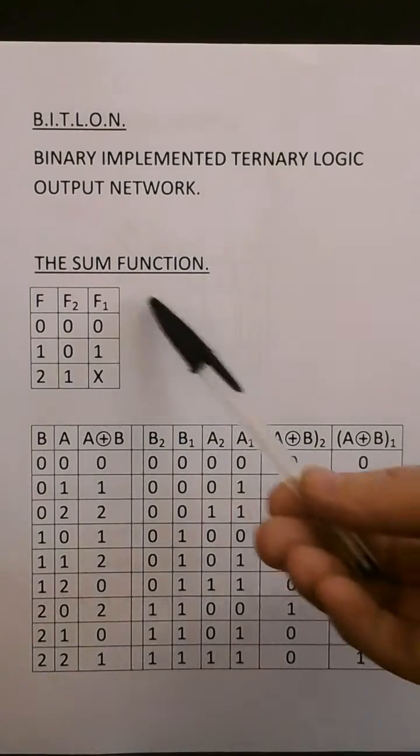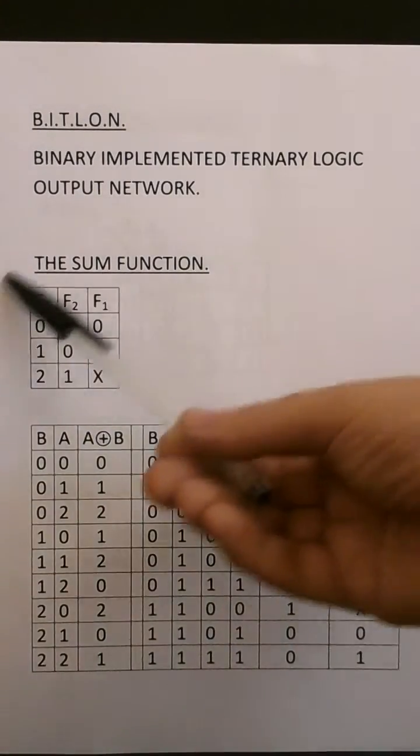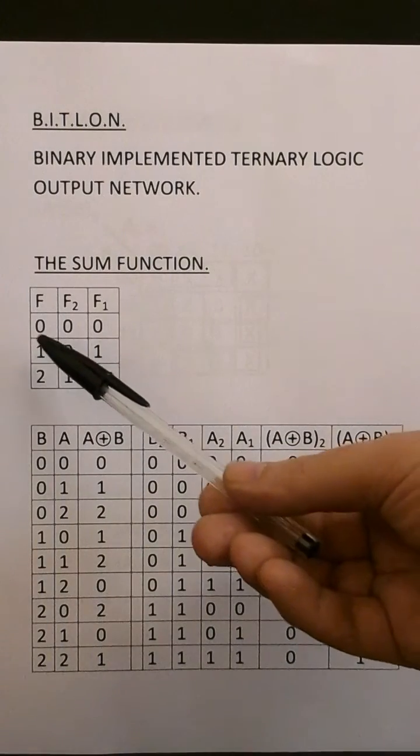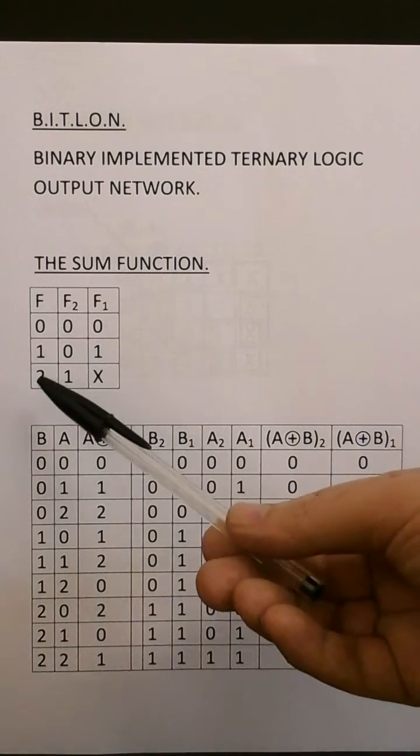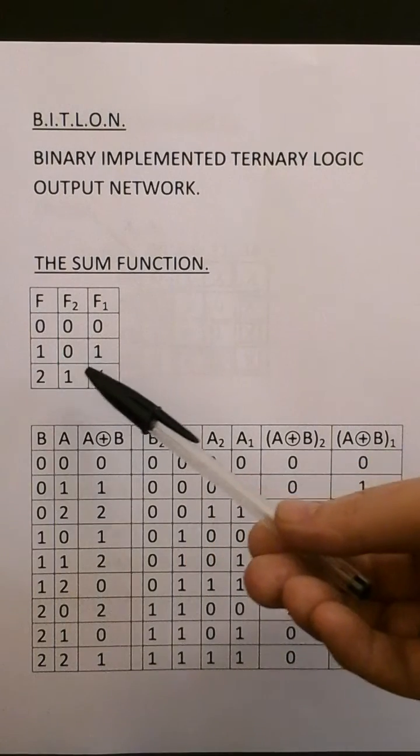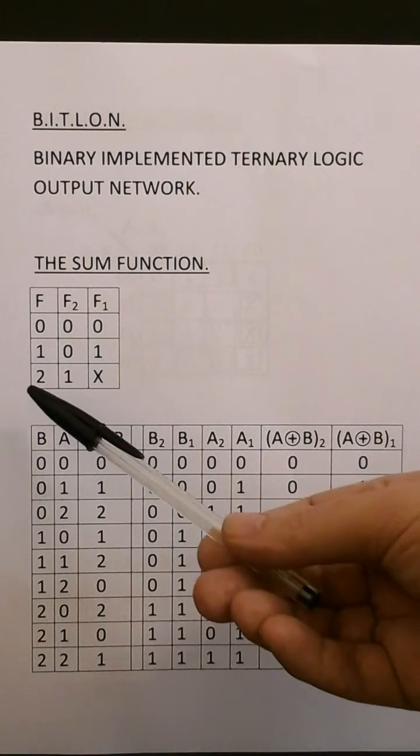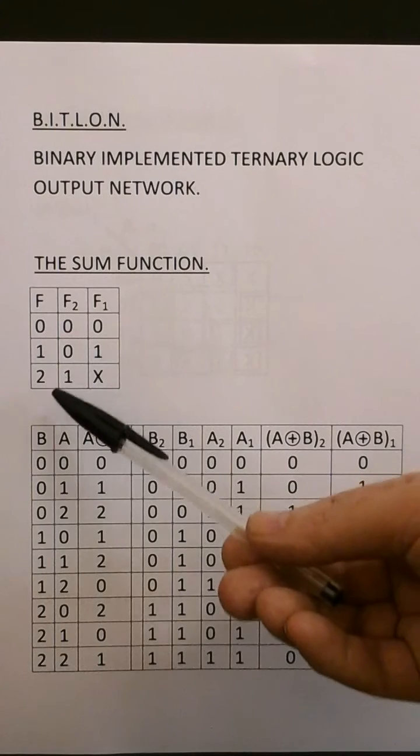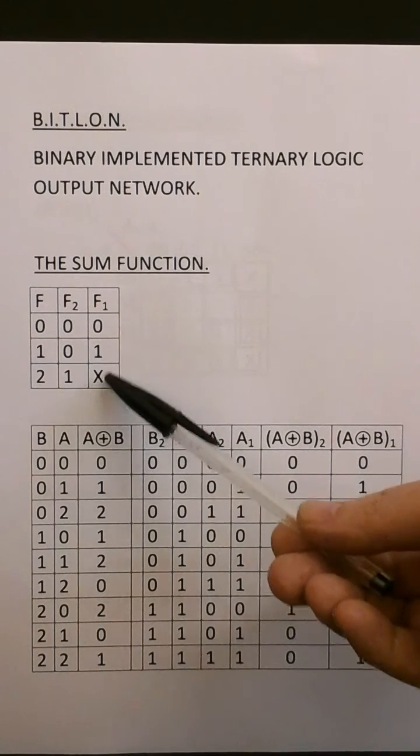I'm going to use this output function coding. If f is 0, f2 is 0 and f1 is 0. If f is 1, f2 is 0 and f1 is 1. If f is 2, f2 is 1 and f1 is a don't care state.